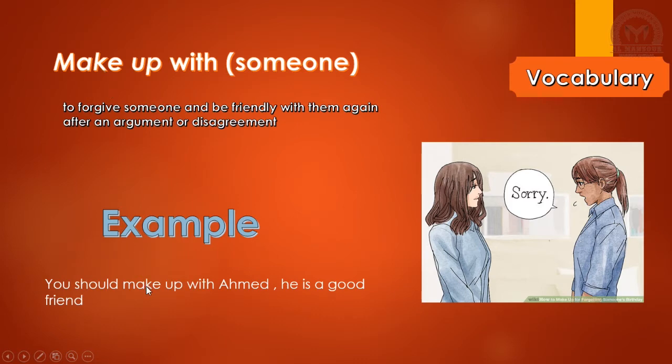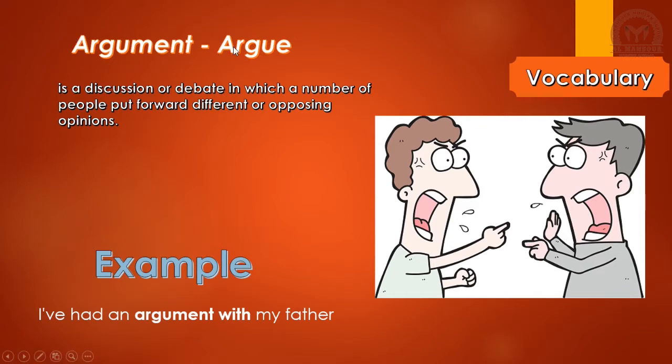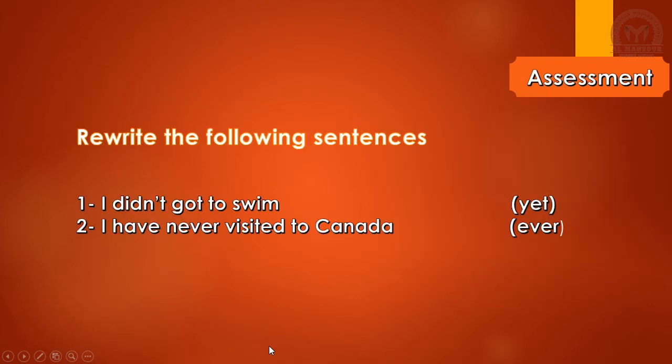How to differentiate between the normal makeup and make up with someone: if you see a space between the two words, then it's make up meaning fixing relationships. If there wasn't a space, then it means something different. Argument or argue - argument is a noun, argue is the verb. It's when you're talking to someone but fighting with words. This is called an argument, a discussion or debate in which people put forward different or opposing opinions. Example: I have had an argument with my father.